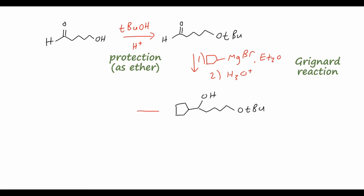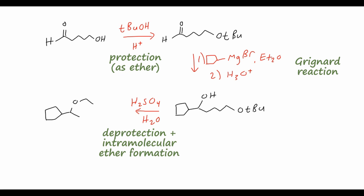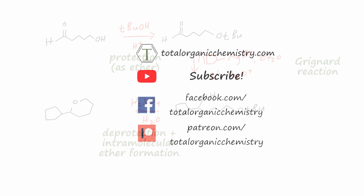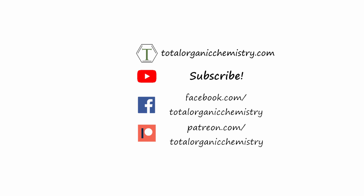Finally, we add this to aqueous sulfuric acid, which accomplishes two things in one step: first, it de-protects the ether to give us the alcohol again; then, since sulfuric acid can form ethers from two alcohols, it closes the ring to give us the six-membered tetrahydropyran ring. Intramolecular reactions are very fast compared to their intermolecular counterparts, so this reaction will proceed pretty cleanly. I hope this video gave you some extra practice on retrosynthetic analysis using alcohols, Grignard reagents, and epoxides. If you liked this video, please like and subscribe to my channel, like me on Facebook at Total Organic Chemistry, and consider donating to my Patreon page, which helps me continue creating this content.